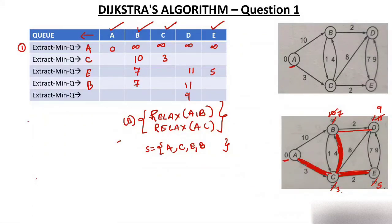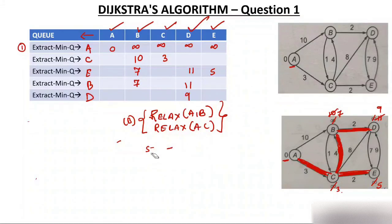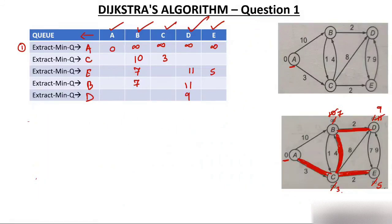Finally, remove the last node D. Add D to S — Q is now empty. Make the edge dark. Find adjacent of D: all adjacent nodes are already extracted, so no changes are made. The final graph represents the shortest paths from source A.